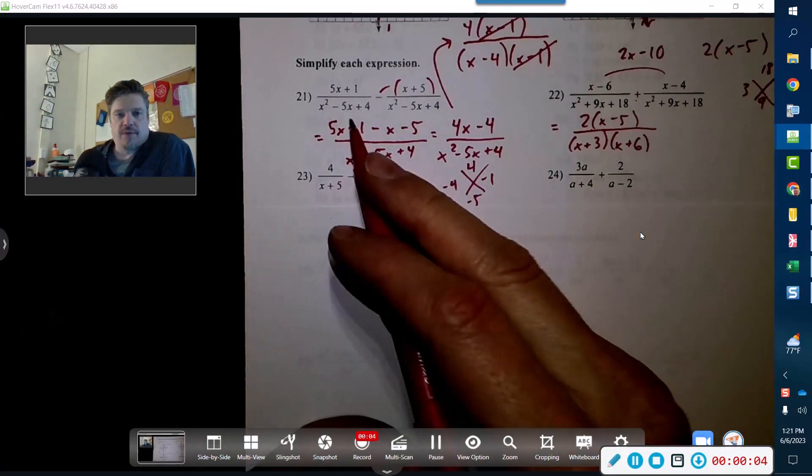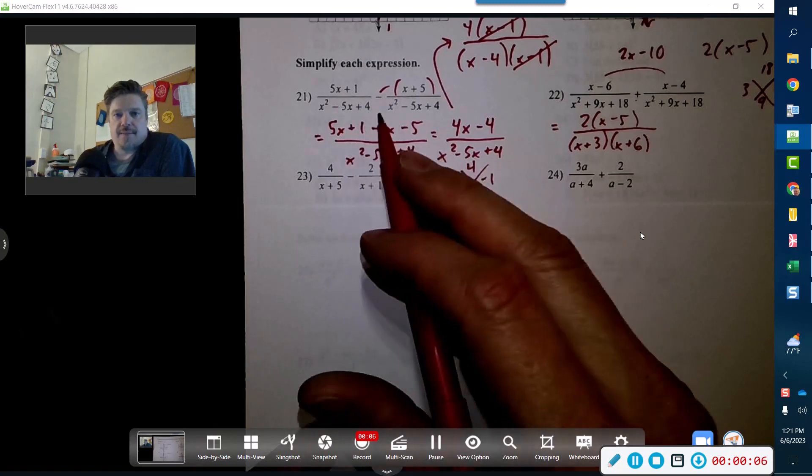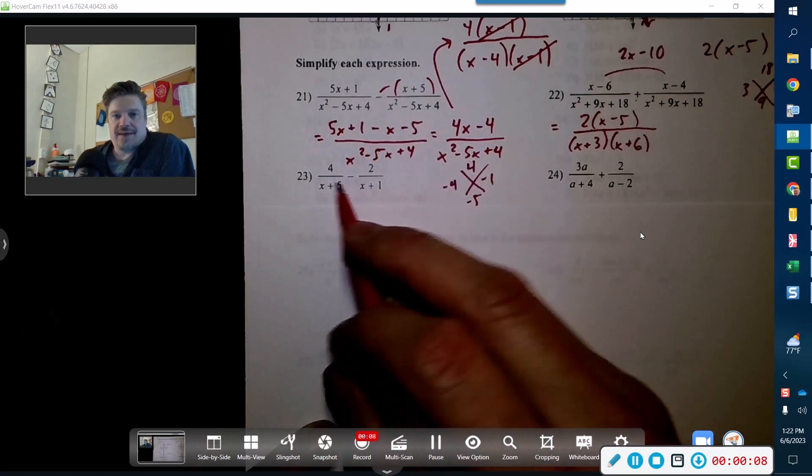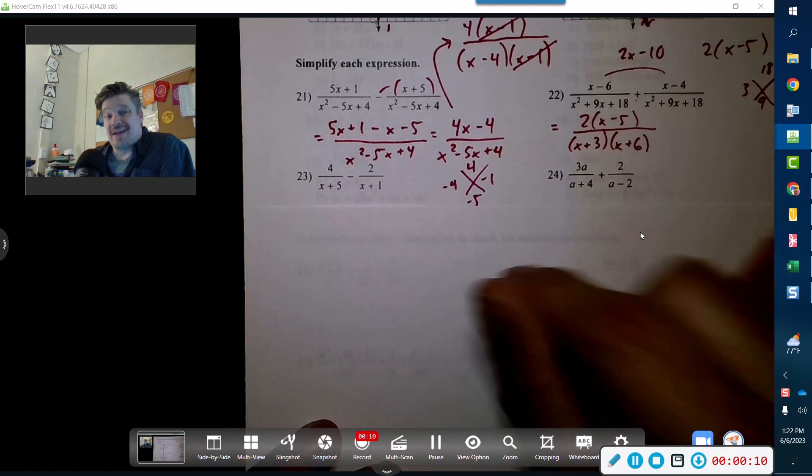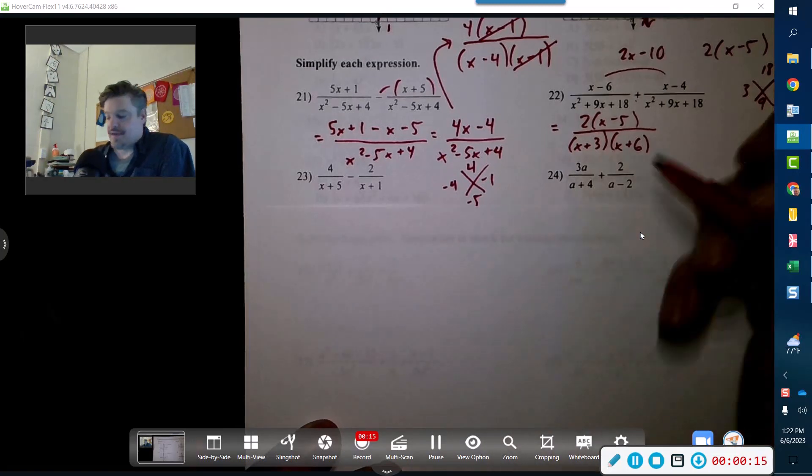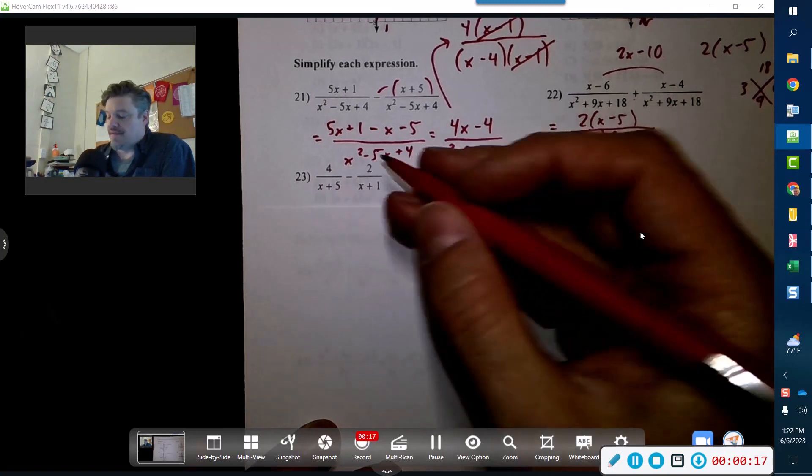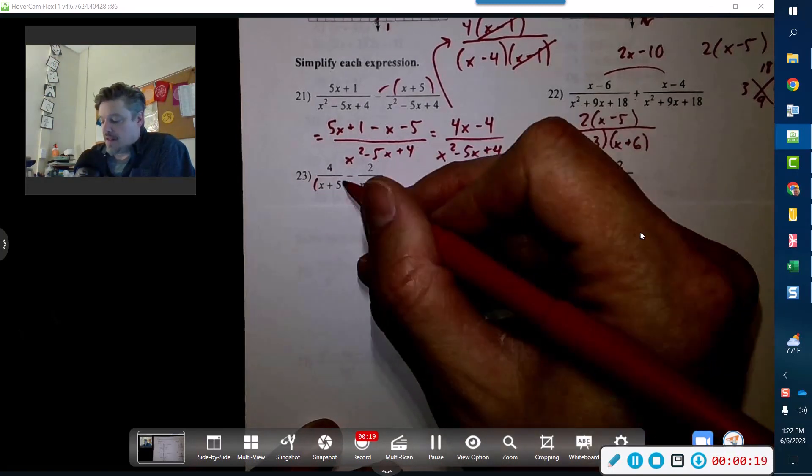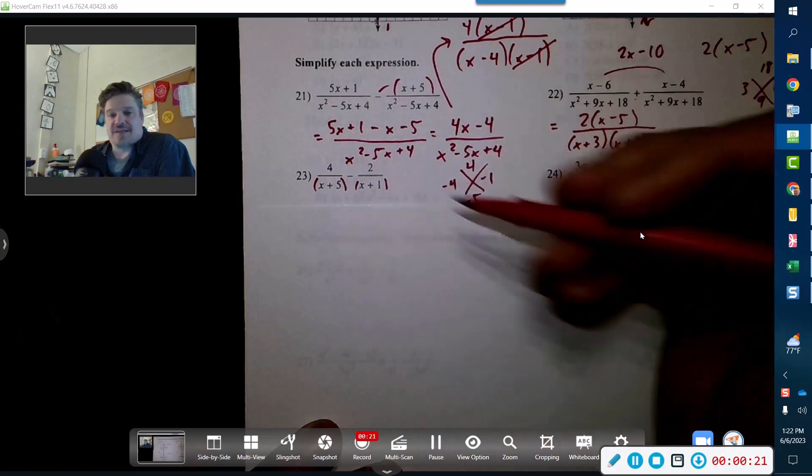23, different ballgame. We've got unlike common denominators here. They were the same here, they are different. So what we've got to do is we have to do exactly what we used to do in elementary school - make sure that they have a common denominator. But in algebra 2 it's a little different; these guys are separate factors.